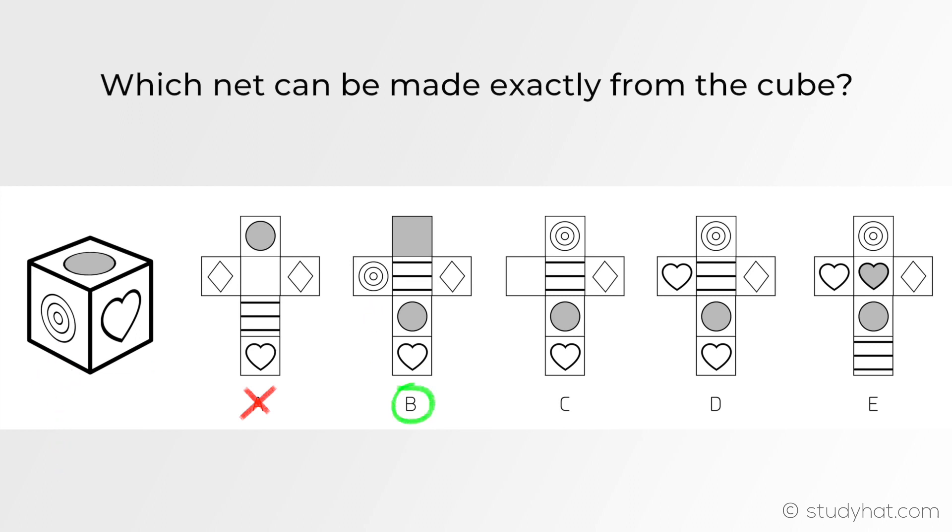Just a quick recap we started off by initially trying to eliminate any obvious mistakes within the given nets however B didn't seem to have any. Once we visualized folding the net up it matched with the cube itself and that is how we got the answer.